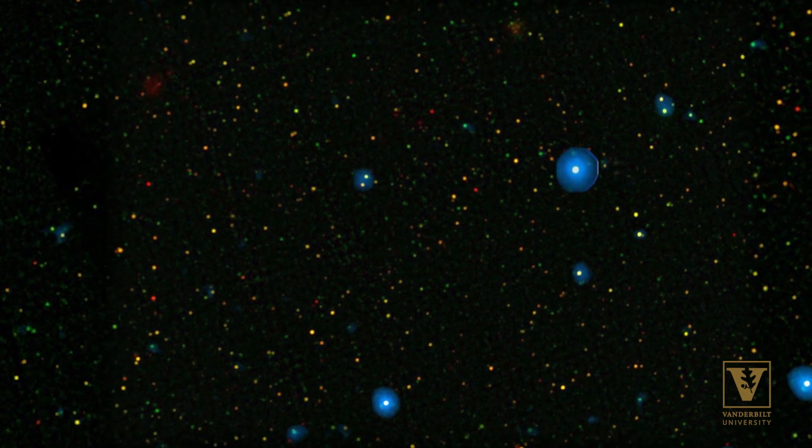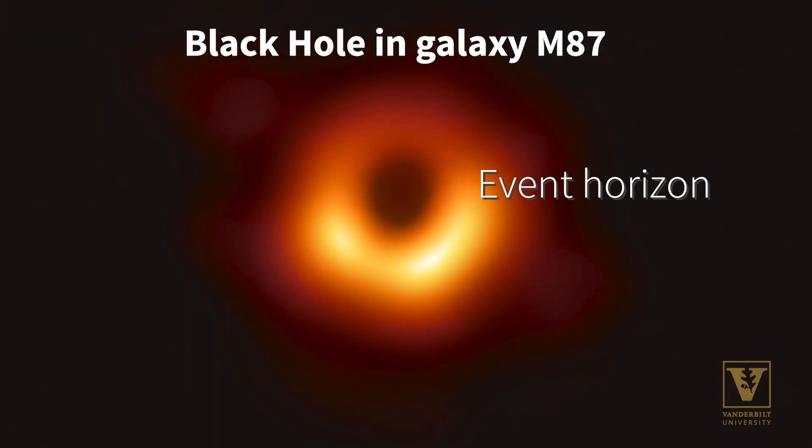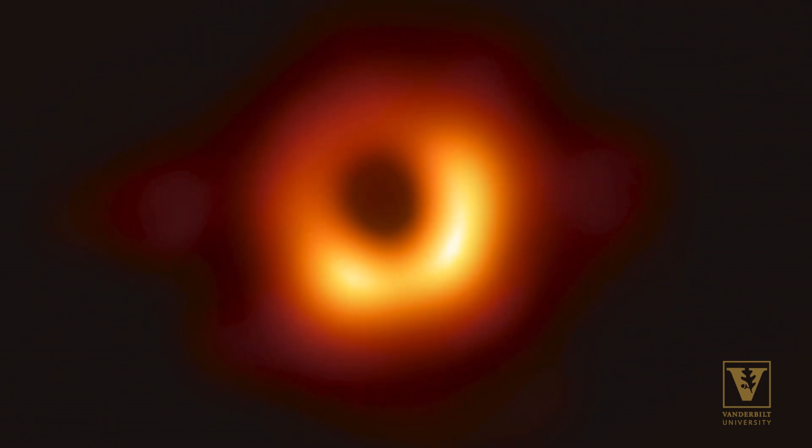We know that there are these objects like black holes inside which all known understanding of the universe simply breaks down. There is a boundary around the black hole which we call the event horizon, after which even light cannot escape. So a black hole has a way to tell its presence only through gravity.